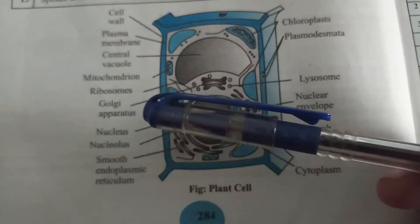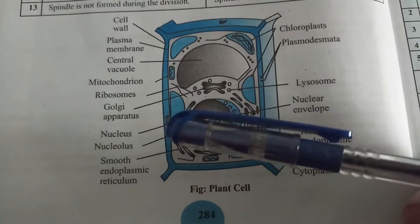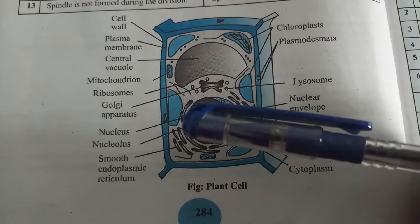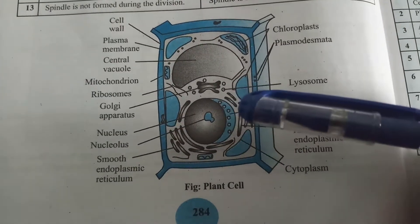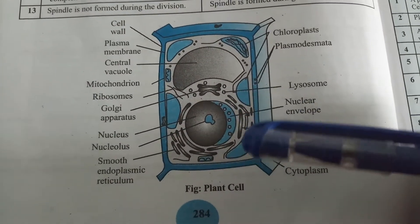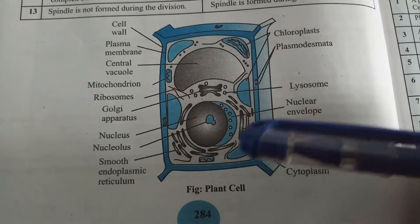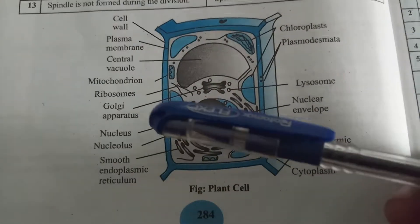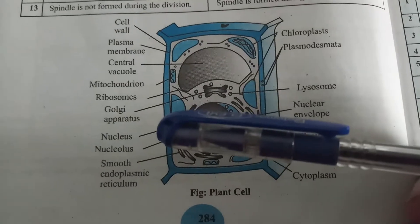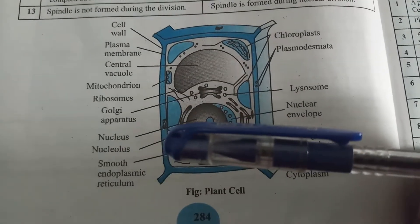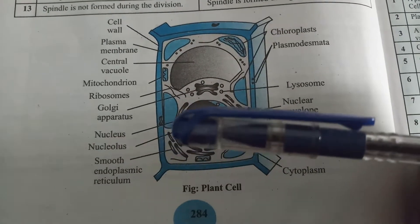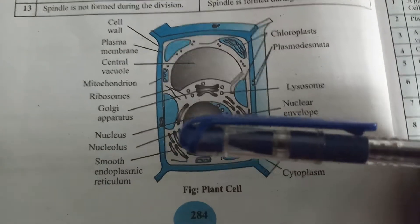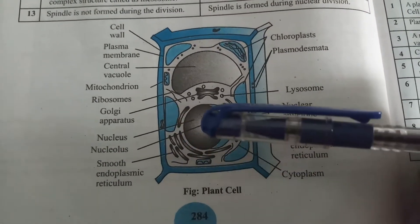Ribosomes are concerned with the synthesis of proteins by forming a polyribosome on the mRNA, which in turn performs translation from mRNA to proteins. Next is the Golgi apparatus, which is concerned with the packing of proteins as well as lipids synthesized by the smooth endoplasmic reticulum and rough endoplasmic reticulum.